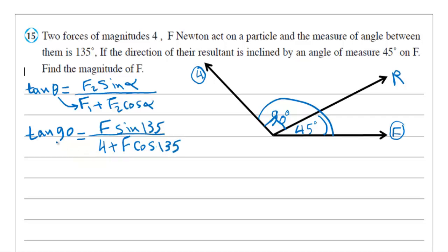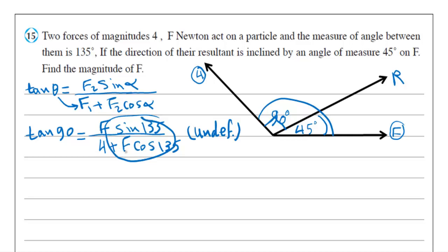We know that tan 90 is undefined. Then the denominator equals 0, because this entire fraction is undefined — it means the denominator equals 0.